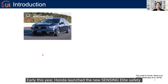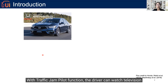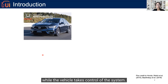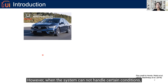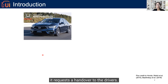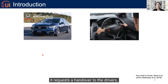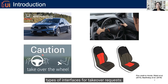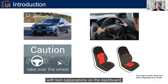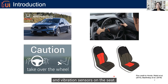Early this year, Honda launched a new sensing elite safety system with Level 3 automated driving features in Japan. With the traffic jam pilot function, the driver can watch television while the vehicle takes control. However, when the system cannot handle certain conditions, it requires a handover to the driver. The existing literature has proposed different types of interfaces for takeover requests: symbols of the wheel and pedals with text on the dashboard, auditory alerts such as speech or beeps, and vibration sensors on the seat.